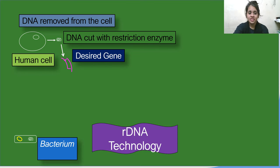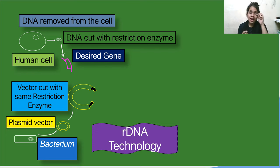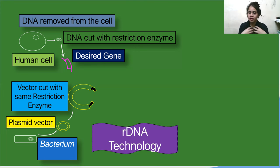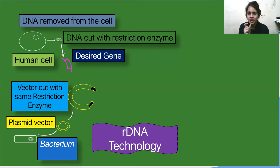This desired gene now has to be fused with another DNA. From bacteria, we remove a plasmid, because the plasmid acts as a vector. A vector is an agent that helps our DNA get expressed into another bacterium, such as E. coli. Just like when you want to go somewhere you use a taxi, bus, or Ola — those are your vectors — similarly, to express my desired gene, I need a vector, and that vector is the plasmid from the bacterium.